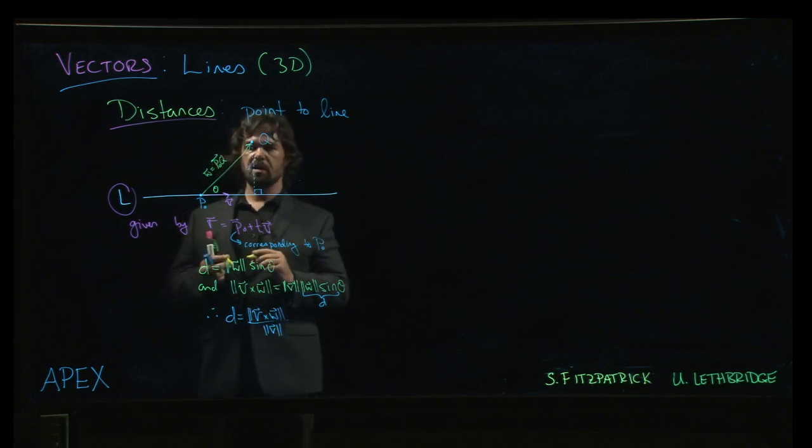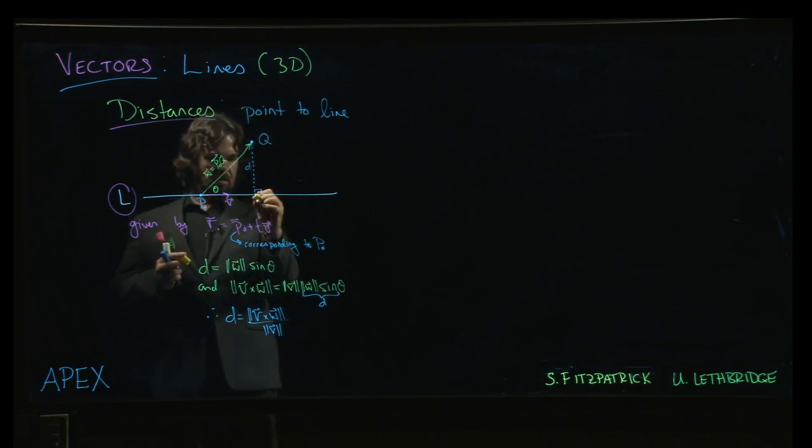And there is so much more that we could get out of this picture. In particular, maybe I want to know the location of this point R. What is the point on the line that actually is as close as possible to this point Q not on the line?